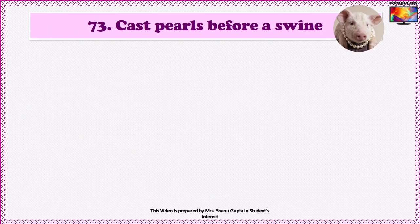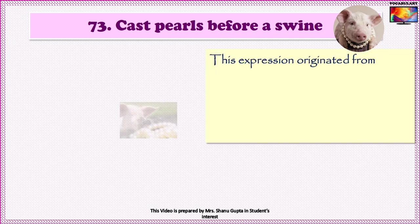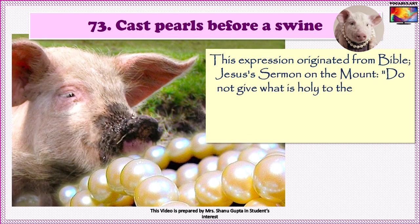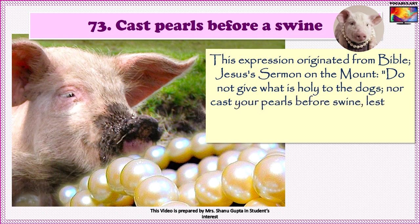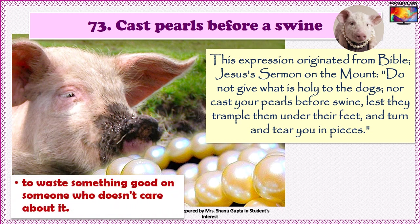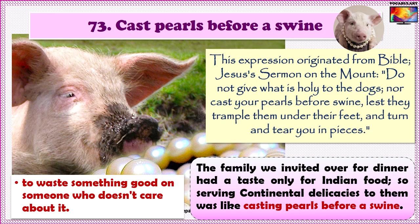The 73rd idiom is 'To cast pearls before swine.' This expression originated from the Bible — Jesus' Sermon on the Mount: 'Do not give what is holy to the dogs, nor cast your pearls before swine.' As we can expect, a swine would not really appreciate the value of those pearls. So, the idiom figuratively means to waste something good on someone who does not care about it. For example: 'The family we invited over for dinner had a taste only for Indian food. So, serving continental delicacies to them was like casting pearls before swine.'